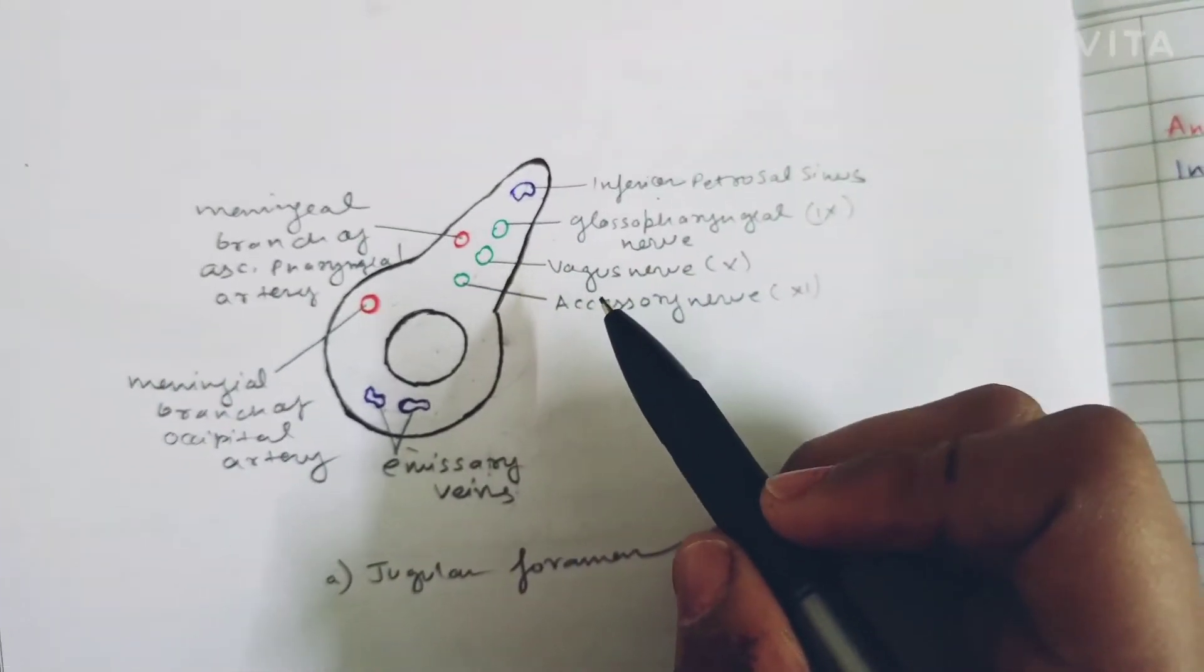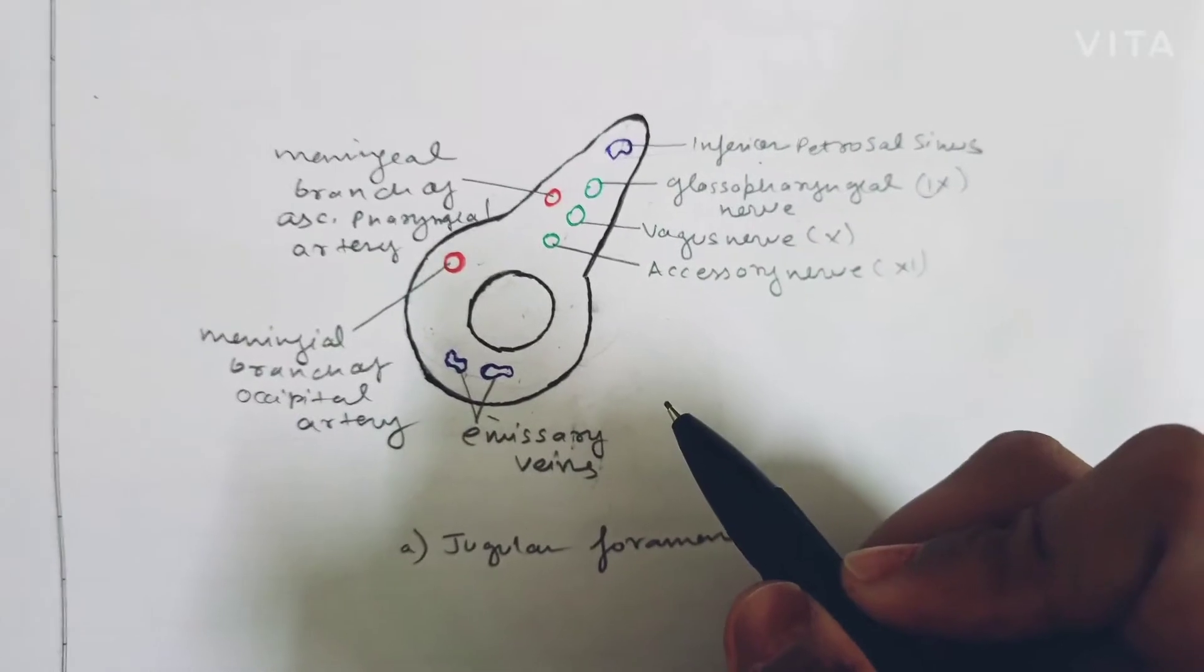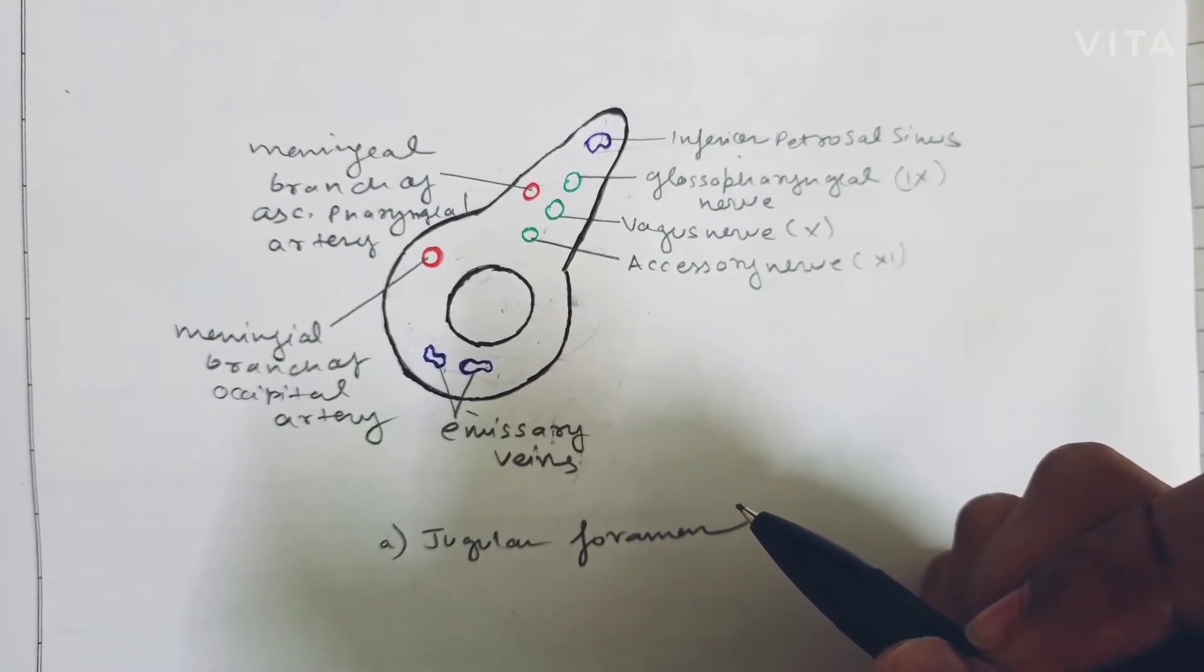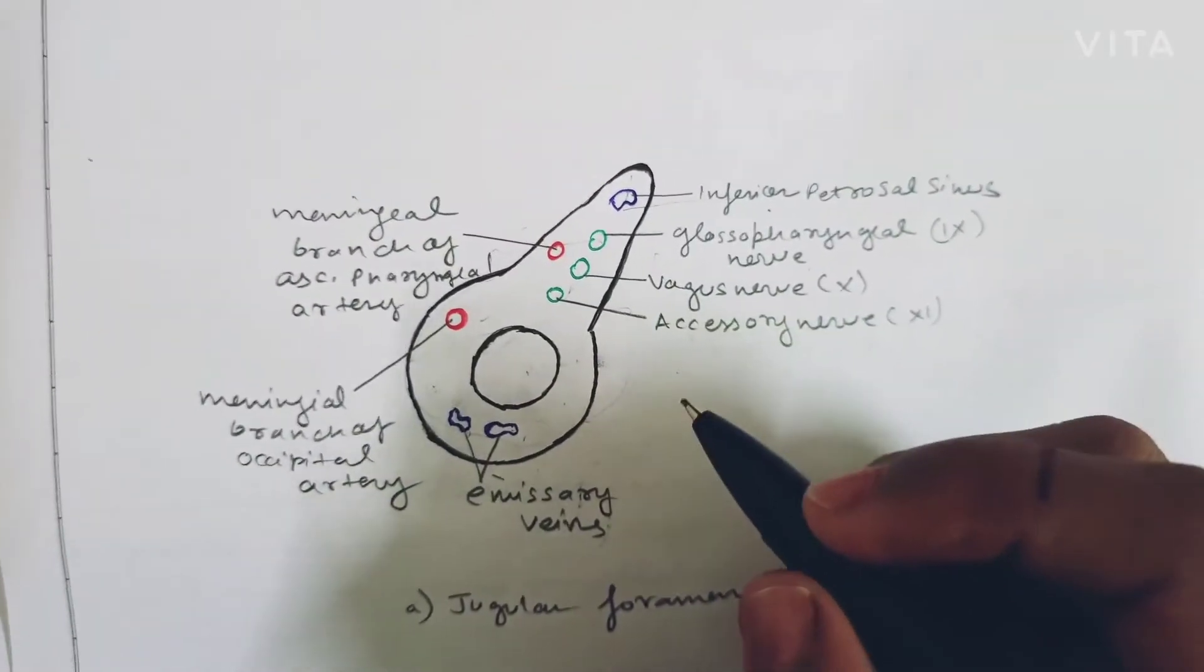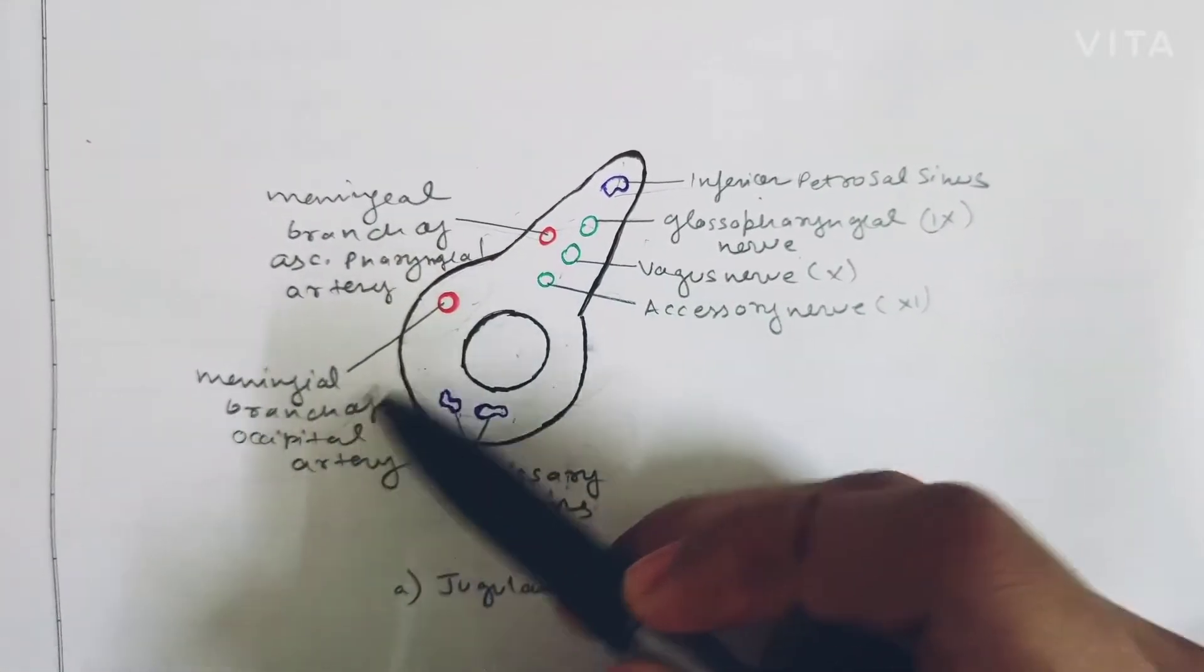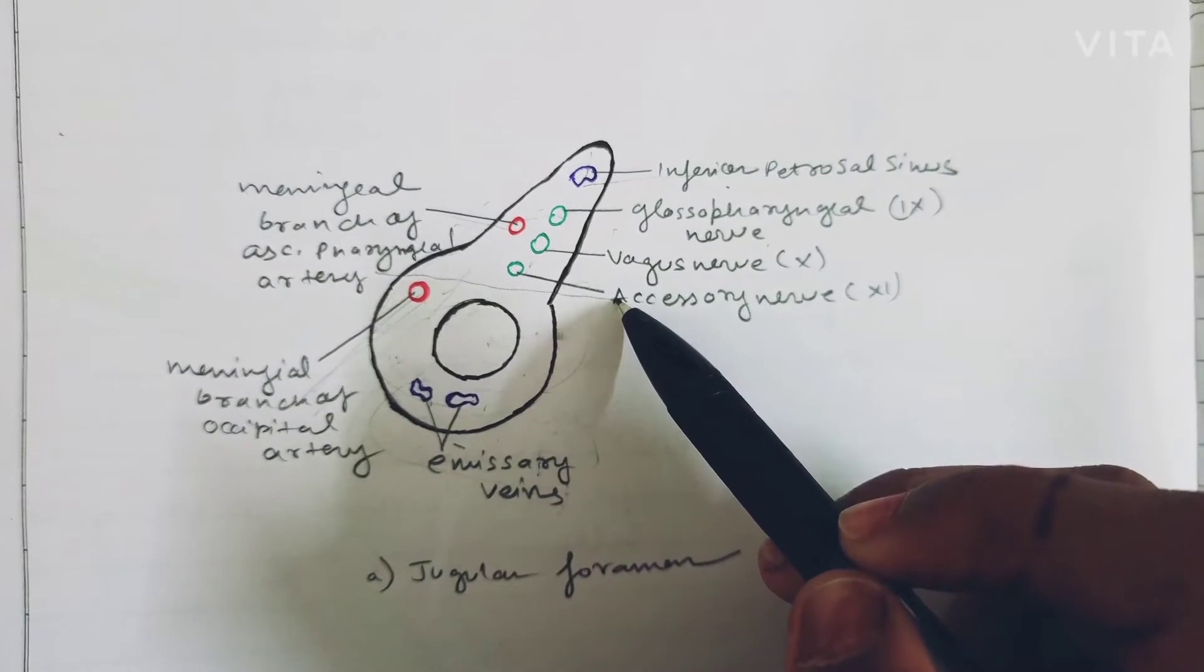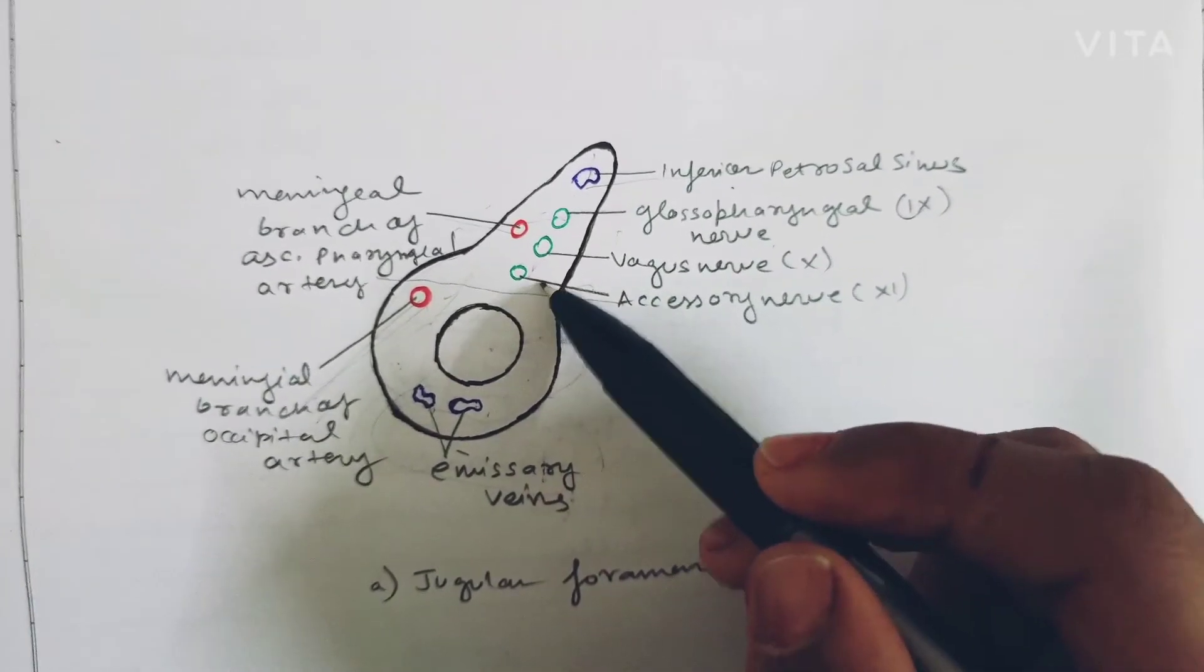I said Joe - so J is for jugular vein which we cannot see in this diagram but it's definitely present. Then occipital artery - this is the meningeal branch of occipital artery. And then this is the emissary vein. So this was the posterior. And then middle - here comes the middle: 9th, 10th, 11th.